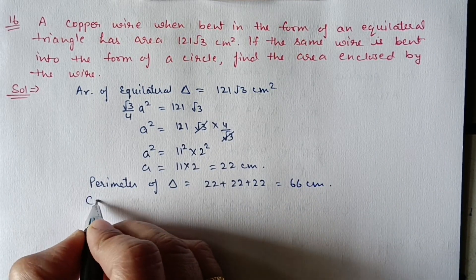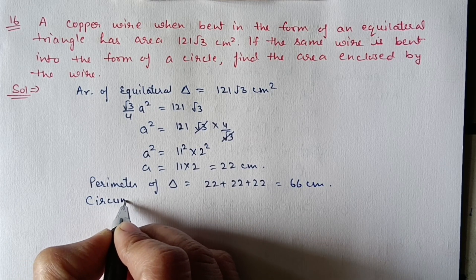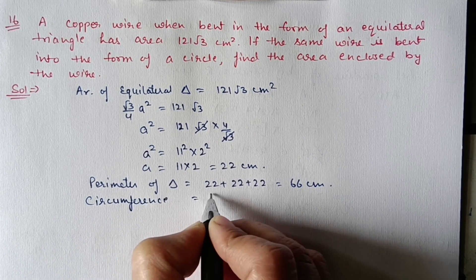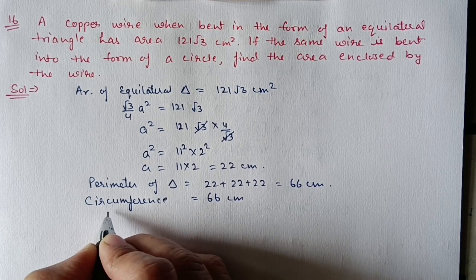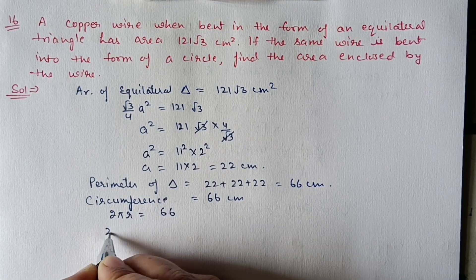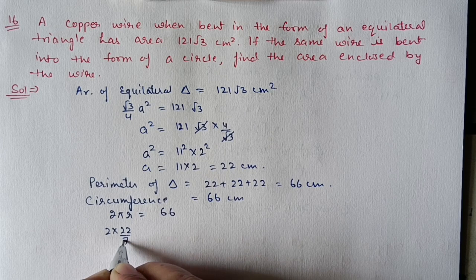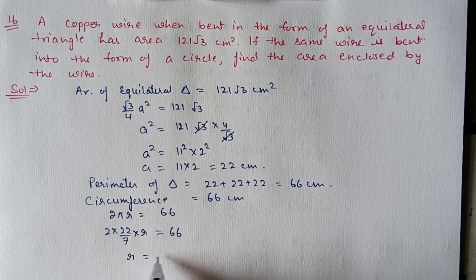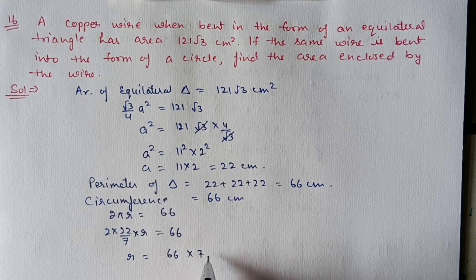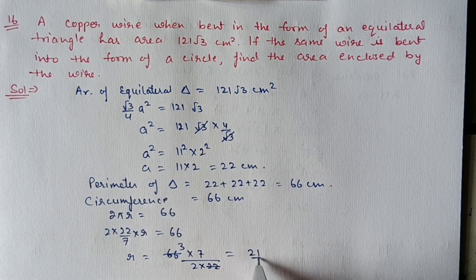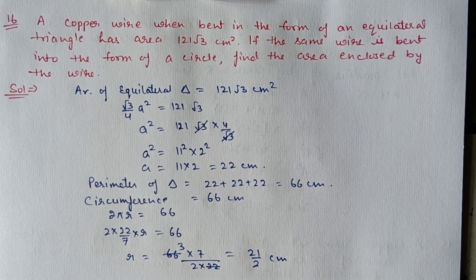This 66 centimeter will be the circumference of the circle. So 2πr = 66, giving 2 × 22/7 × r = 66. Therefore r = 66 × 7 upon 2 × 22 = 21/2 centimeter.